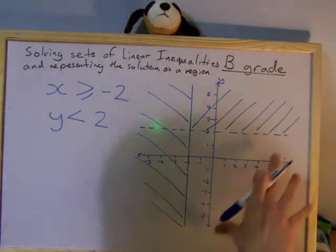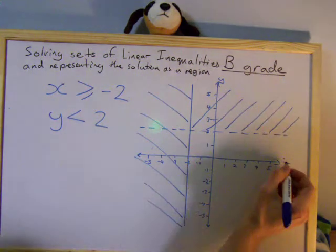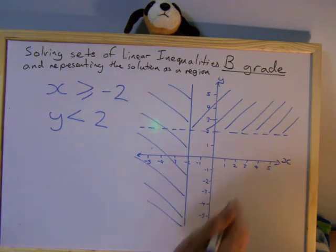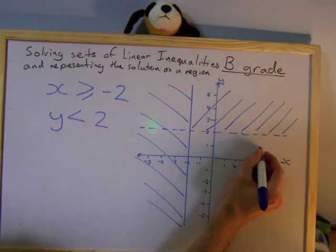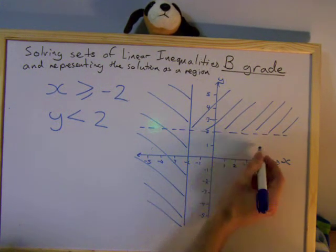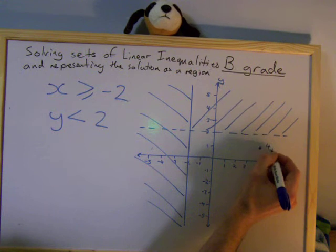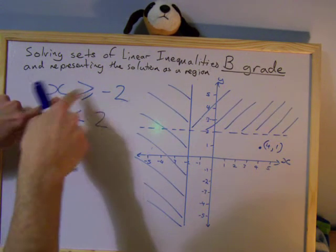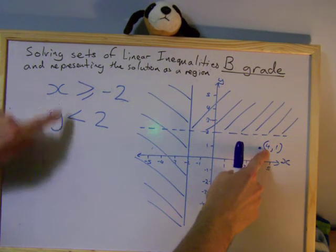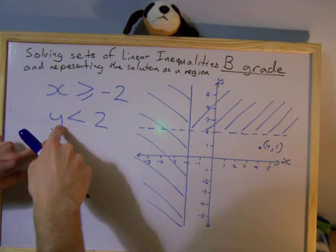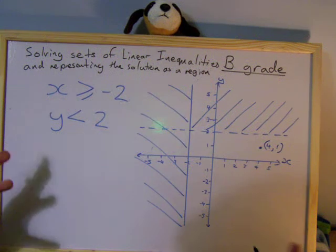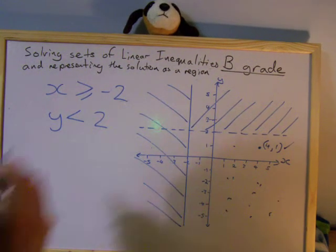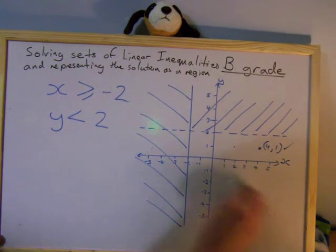And now I've got a region there. That is a region of solutions. Every single point in there gives you an x and a y that will both satisfy those two points. So for example, if I take this point there where x equals 4 and y equals 1, I'll just check it. The x condition is that x must be greater than minus 2. Well, x equals 4. That's fine. Then the second one is that y must be less than 2. y equals 1. So that's fine as well. So that solution is fine. And every other point in here is absolutely fine. No issues or problems with those at all.